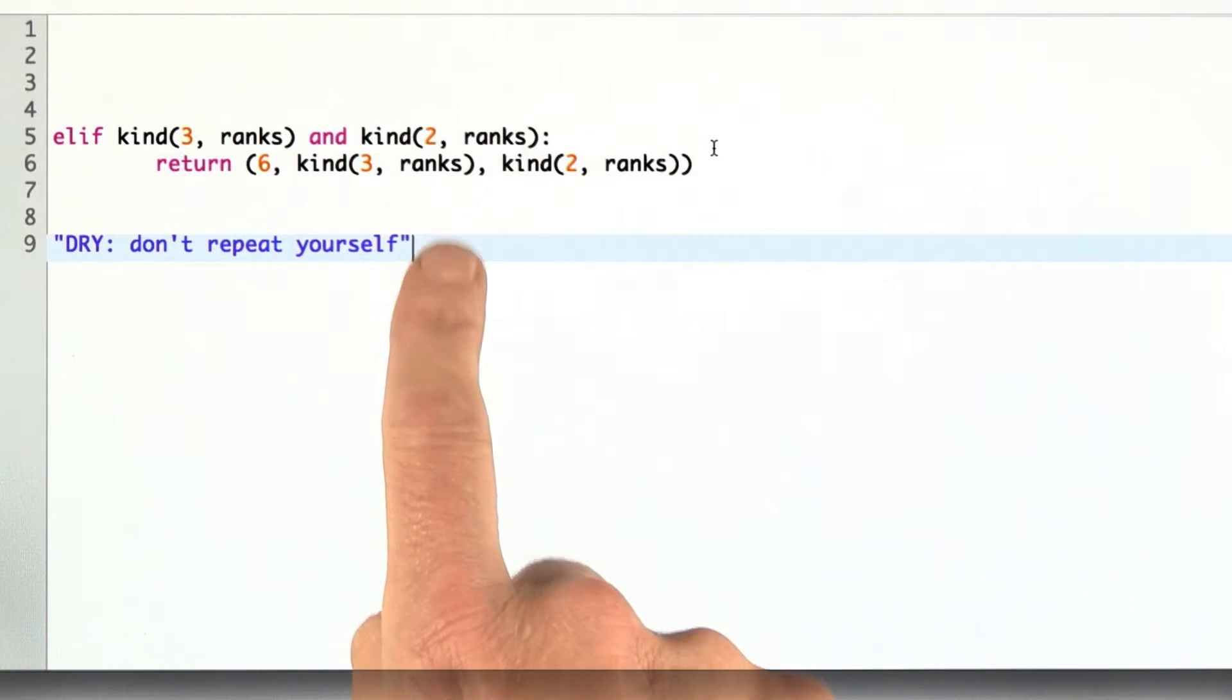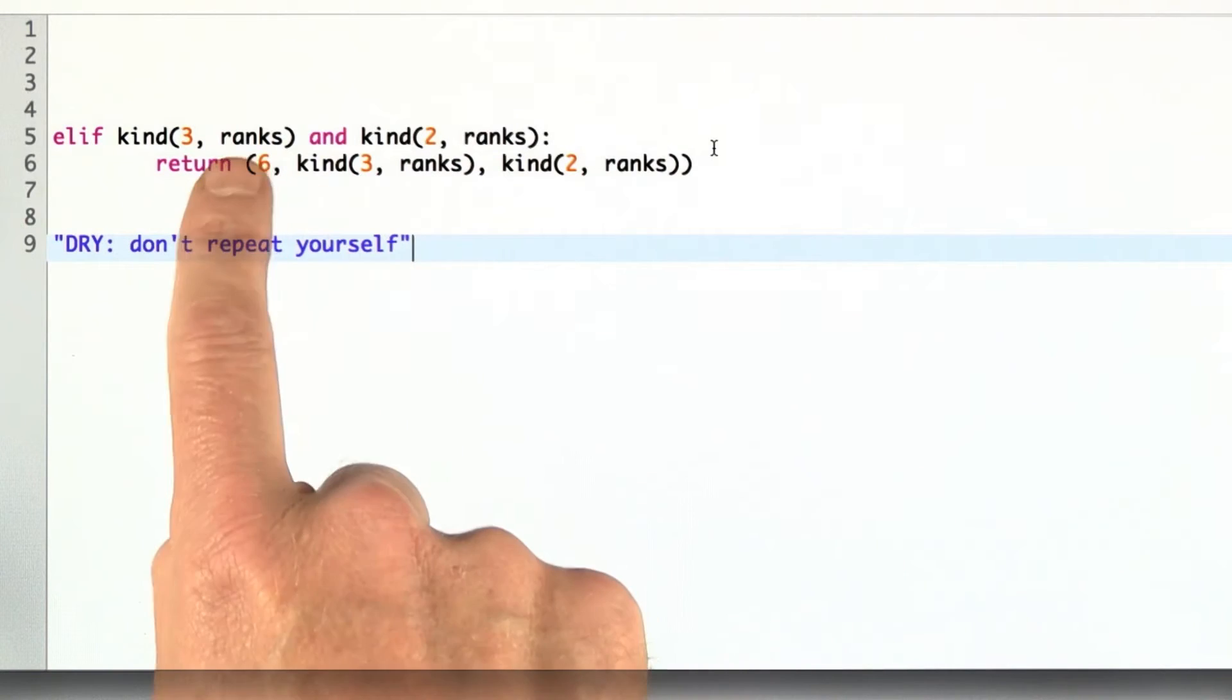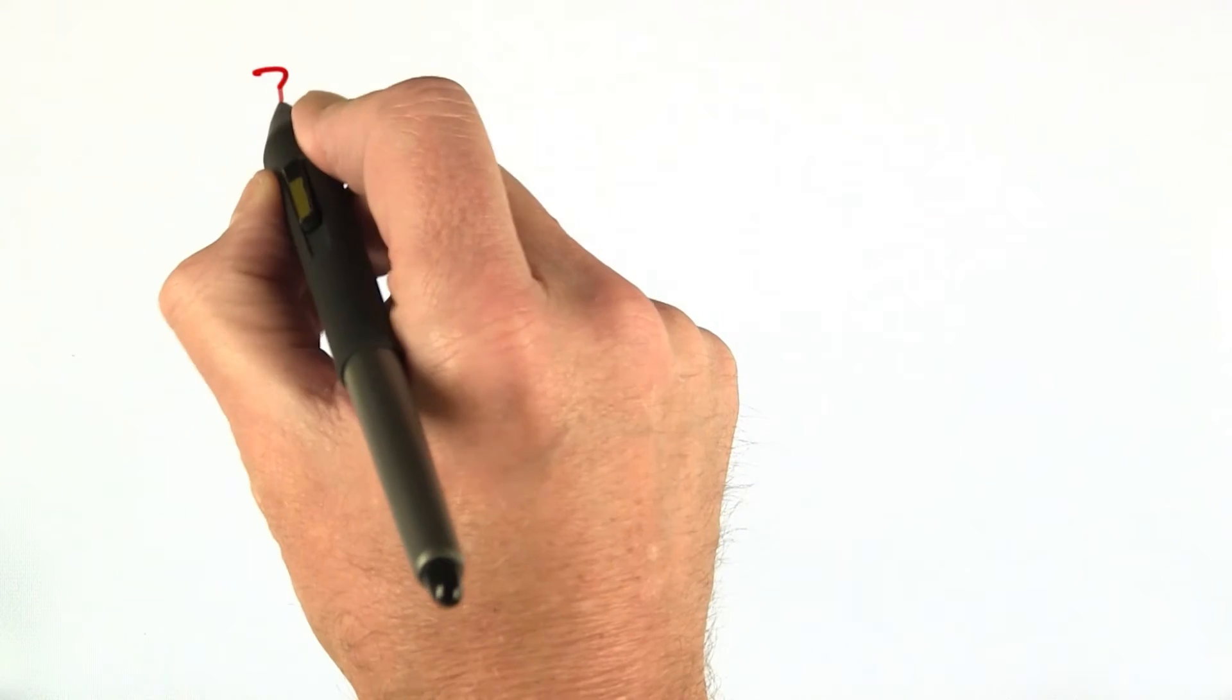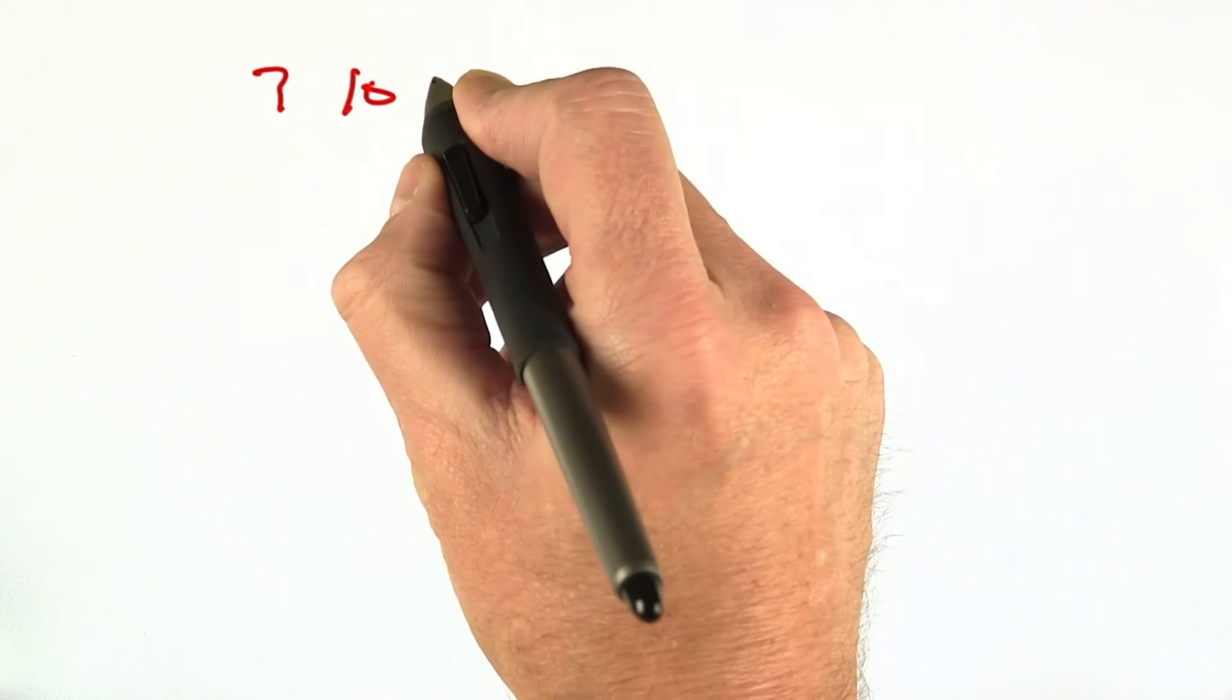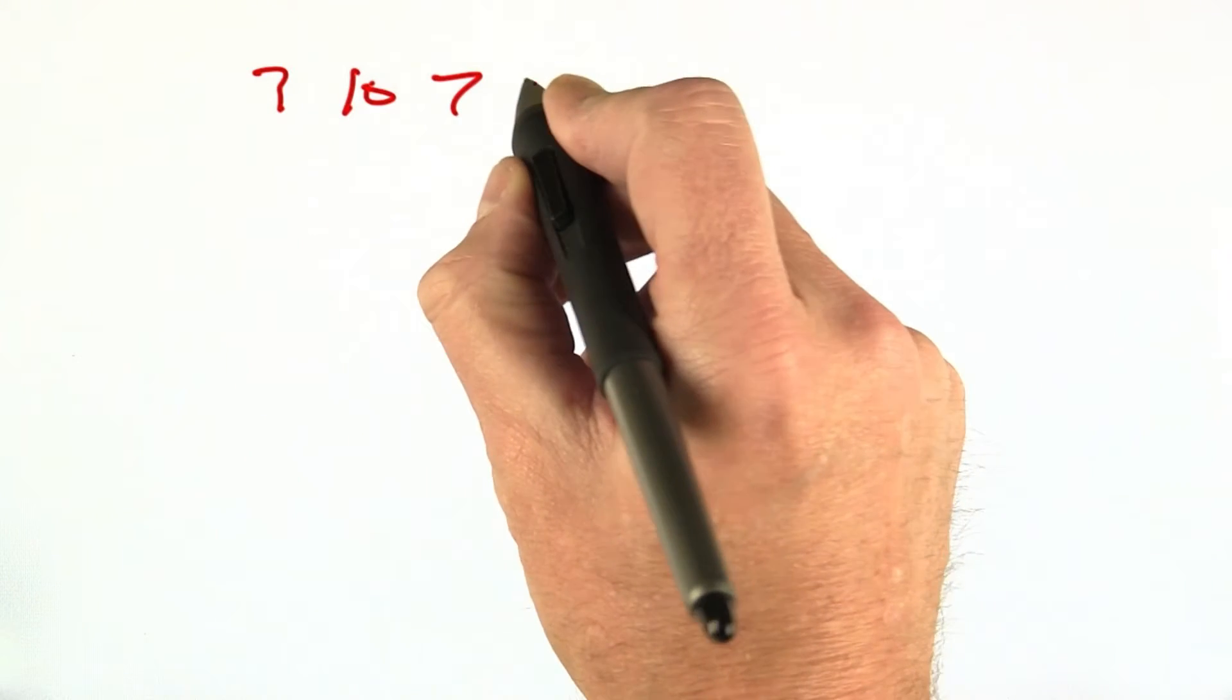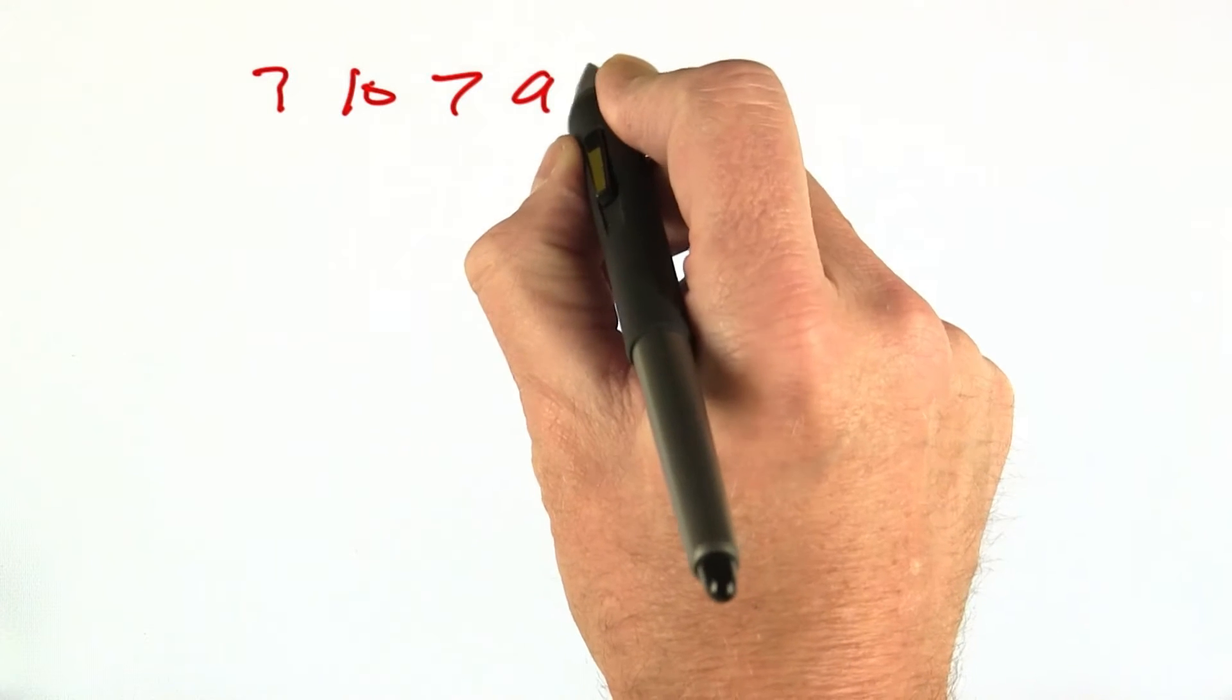In doing that, I came up with a different representation for a hand, for the ranks of a hand. Consider this hand. We have a 7, a 10, a 7, a 9, and another 7.